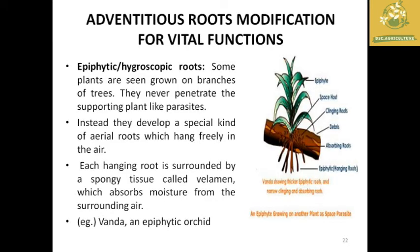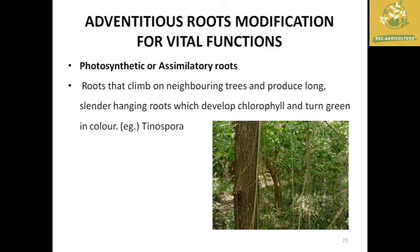Epiphytic or hygroscopic roots are found in plants growing on branches of other trees. They have clinging or hanging roots that never penetrate the supporting plant like a parasite, but instead develop special aerial roots to absorb moisture and surrounding air; example: Vanda, an epiphytic orchid. Photosynthetic or assimilatory roots are roots that climb trees and produce long slender hanging green shoots containing chlorophyll; example: Tinospora.